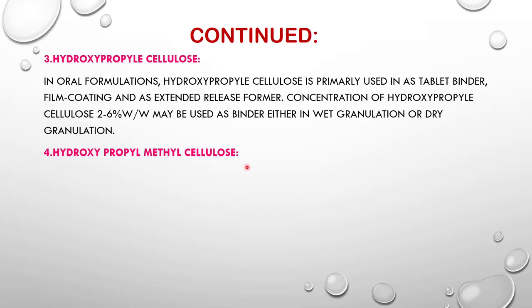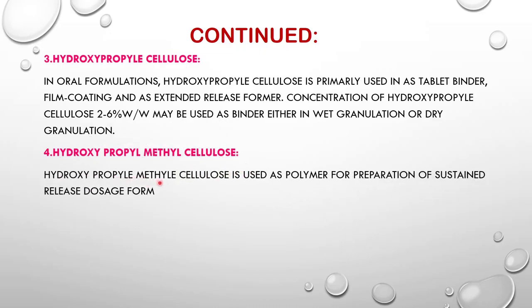Hydroxypropylmethylcellulose is another cellulose used in pharmaceutical industries. Hydroxypropylmethylcellulose is used as a polymer for the preparation of sustained-release dosage forms. Sustained release means a continuous, uninterrupted release of the dosage form into the respective site of the body without interruption.